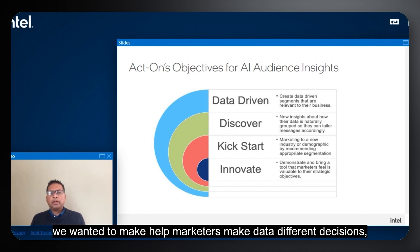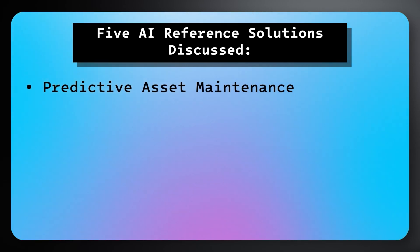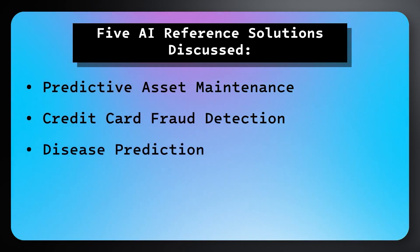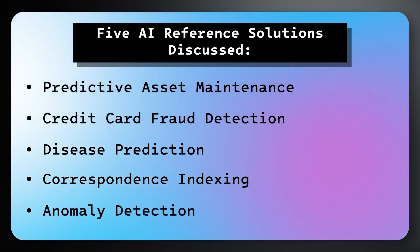Watch the webinar and follow the resource links to learn about all five of the AI reference solutions discussed: predictive asset maintenance, credit card fraud detection, disease prediction, correspondence indexing, and anomaly detection.